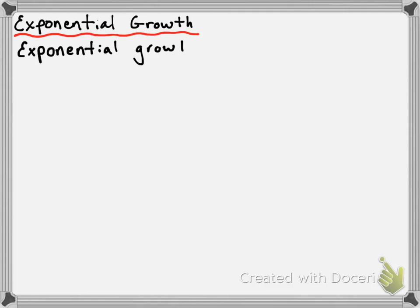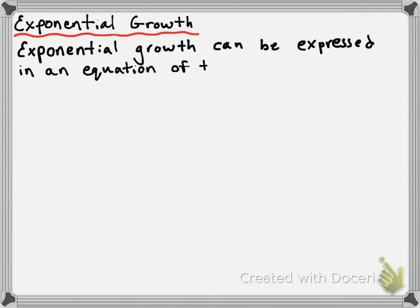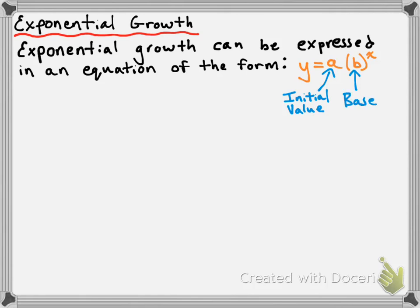First of all, all exponential growth problems can be modeled or expressed in an equation that looks like this. So, y is equal to a times b to the power of x. Each of these parts have a role: the y and x values are just the y and x values of points on our graph. The a value up front is our initial value — it describes the initial value of your exponential growth problem. b is the base, and x is just the exponent.